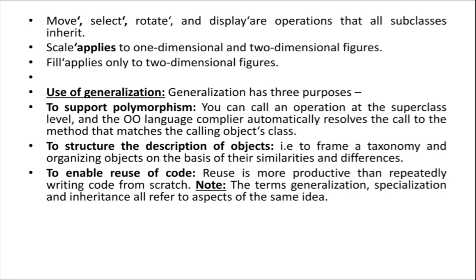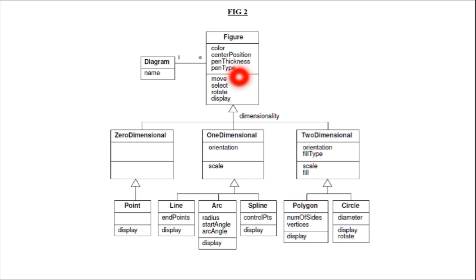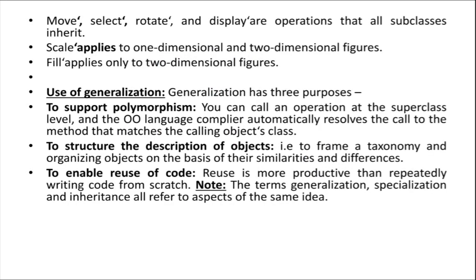The second advantage is inheritance — subclasses can inherit features of the superclass, meaning reuse of code is possible. For example, the code of display is in the figure superclass, and the same code is used by the zero-dimensional, one-dimensional, and two-dimensional subclasses. That is reuse of code — we can reuse the code if we use generalization.